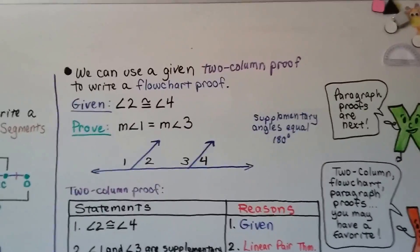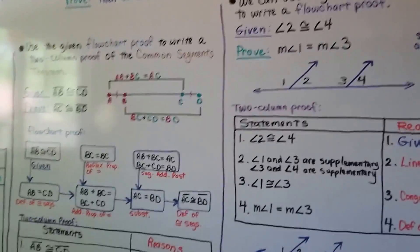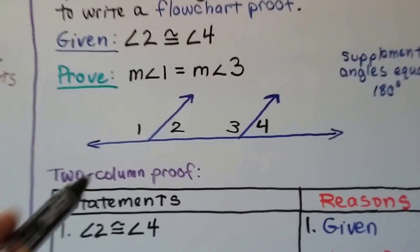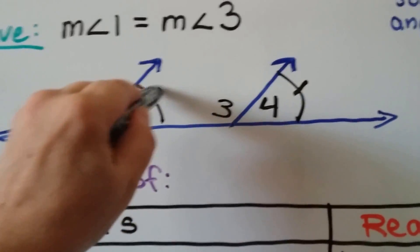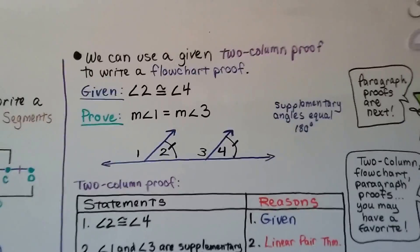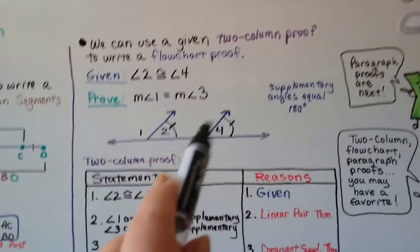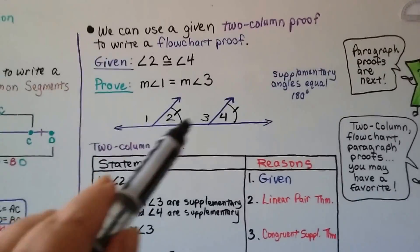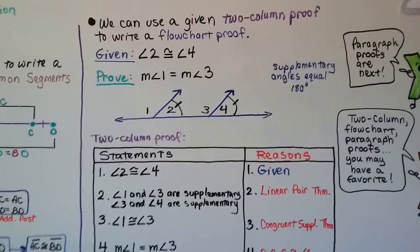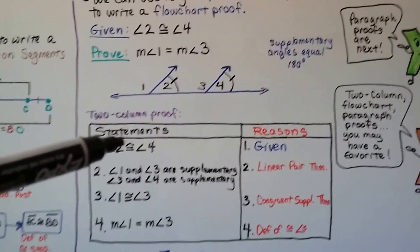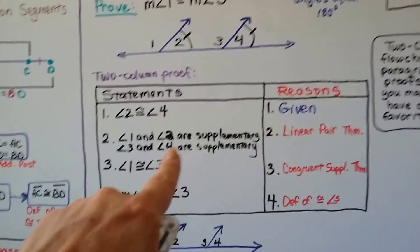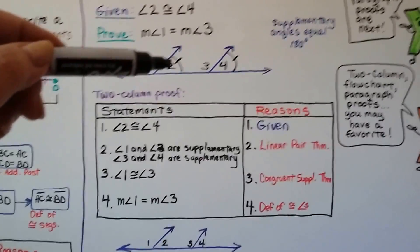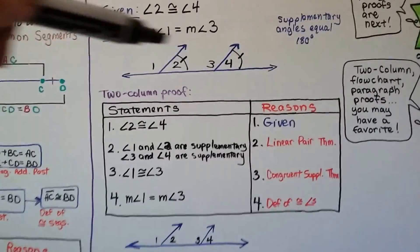We can also use a given two-column proof to write a flowchart proof. So in this example we took a flowchart and wrote a two-column. Now we're going to take a two-column and make a flowchart. We have our given: angle 2 is congruent to angle 4. We can put tick marks to show that. Remember, supplementary angles are 180 degrees. Angles 3 and 4 are supplementary, and angles 1 and 2 are supplementary. We need to prove that the measure of angle 1 equals the measure of angle 3.